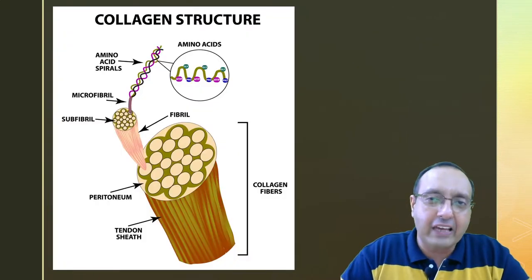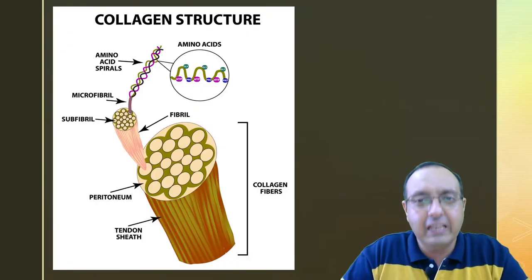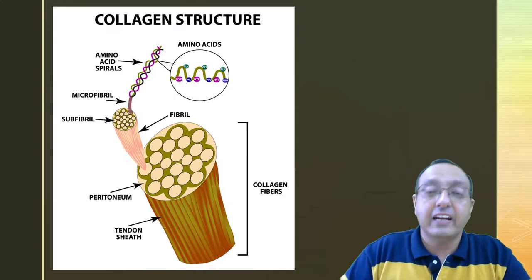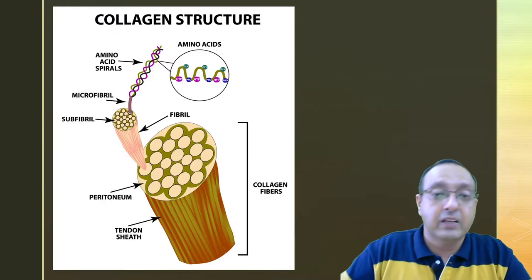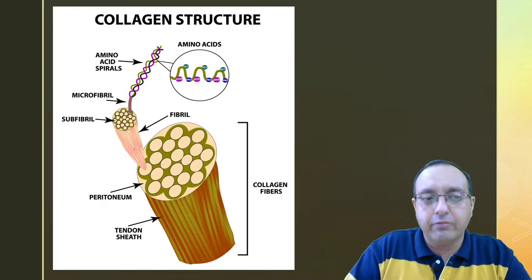So what does collagen structure look like? Collagen has very high tensile strength. It has more tensile strength than steel of the same cross-section. So collagen structure is made of these fibrils.